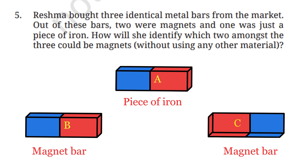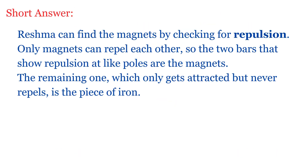The bar that never causes repulsion is the piece of iron. We can give two types of answers — a short one and a long one — depending on how many marks the question carries. Short answer: Reshma can find the magnets by checking for repulsion. Only magnets can repel each other, so the two bars that show repulsion at like poles are the magnets. The remaining one, which only gets attracted but never repels, is the piece of iron.